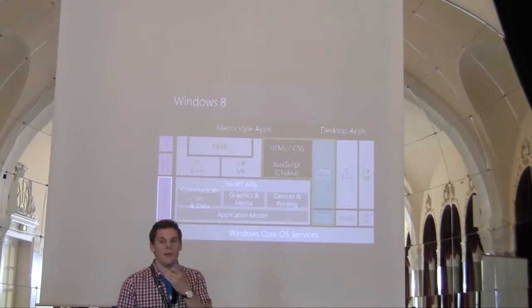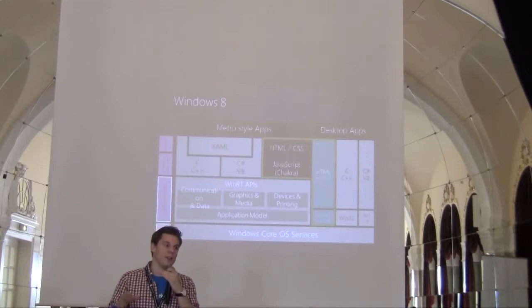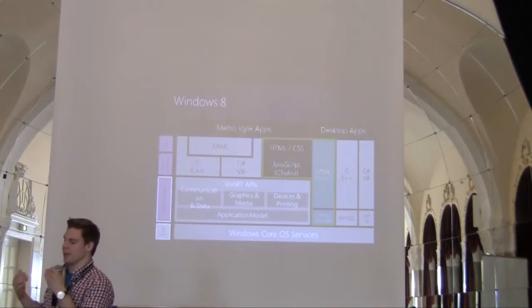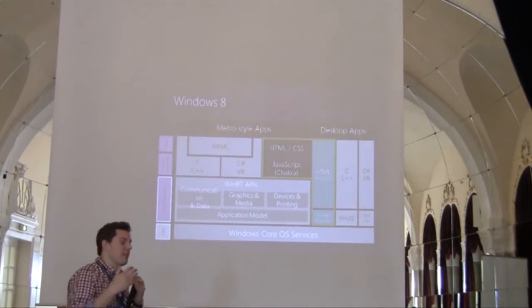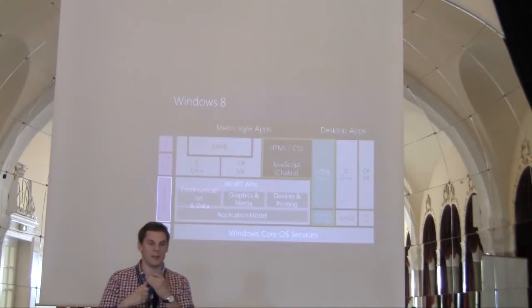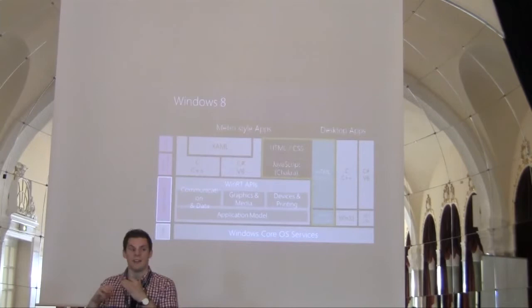If you think about all those applications online that could run on the system — they're not running on the system because they're running in a host, an engine, mostly a browser. And because it's running in a host, it's always limited by the limitations of that host. What we did is we basically made the whole system the host. We have Chakra, a JavaScript engine integrated into the system, and it is exposing every single feature Windows has.